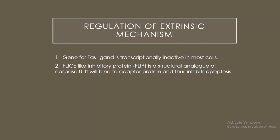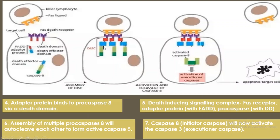You can understand FLIP's role by looking at the DISC assembly: where procaspase 8 normally binds, the FLIP protein — being a structural analog of procaspase 8 — binds instead, preventing procaspase 8 from joining. Since FLIP has no enzymatic activity like procaspase 8, the DISC is non-functional. As a result, there is no activation of caspase 8 and no activation of caspase 3, so apoptosis is inhibited.